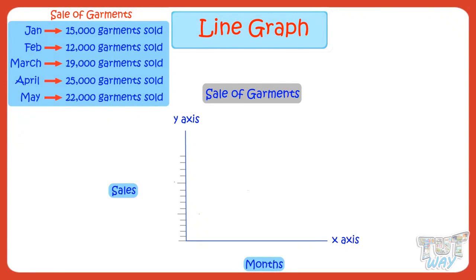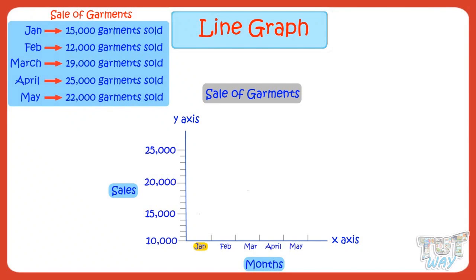As we make a scale along the y-axis to show the numeric values, first see the range of values that we have to show on the scale. Here, the quantitative or numeric data we have is in the range of 12,000 to 22,000. So let's make a scale showing values 10,000 to 25,000 so as to accommodate all the numbers we have. And on x-axis, write the names of months. Sales for January are 15,000 garments.